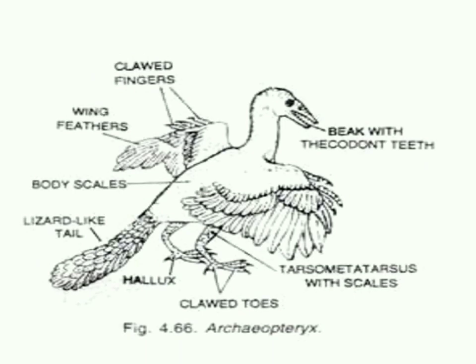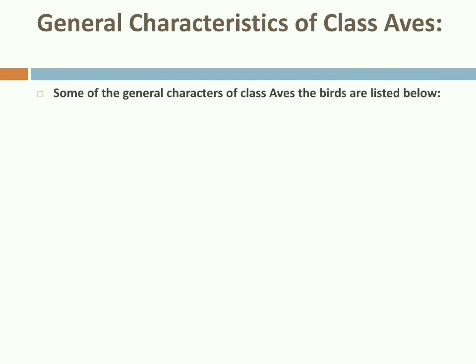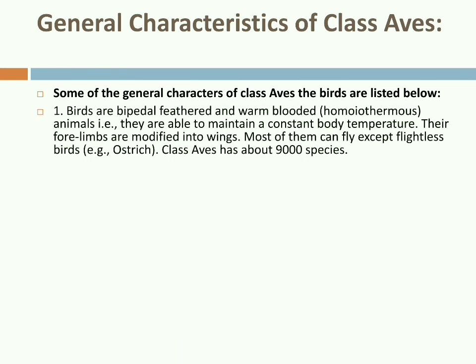Archaeopteryx is a fossil bird and a connecting link between reptiles and Aves. We will discuss Archaeopteryx further during classification of birds in forthcoming slides. Now, for general characters of birds: birds are bipedal, feathered, and warm-blooded — that is, homeothermal animals. They are able to maintain a constant body temperature. Their forelimbs are modified into wings. Most of them can fly, except some flightless birds like the ostrich. Class Aves under phylum Chordata has about 9,000 species.